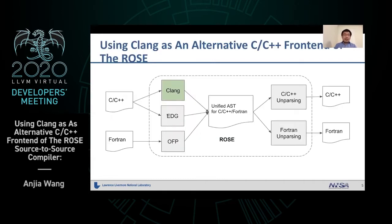This is the architecture of Rose compiler. We already have EDG and Open Fortran Parser as a frontend. Now we are adding Clang as a third option. With the frontend, we can generate this unified AST, and then unparse new source code from that AST.